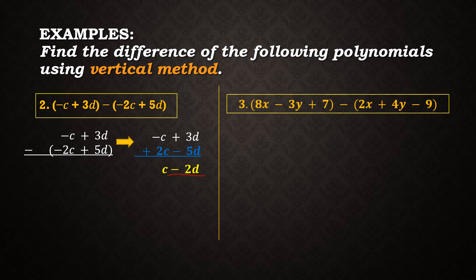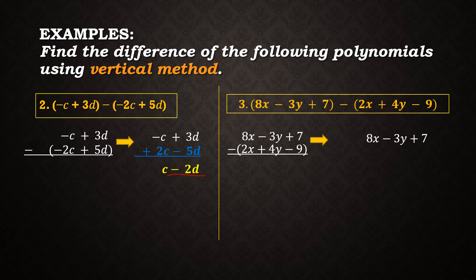For example number 3, we have the trinomials 8x minus 3y plus 7 minus the quantity 2x plus 4y minus 9. We align and rewrite, changing signs of the subtrahend: 8x minus 3y plus 7 plus negative 2x minus 4y plus 9. When we add, the result is 6x minus 7y plus 16. That is the answer to example number 3.